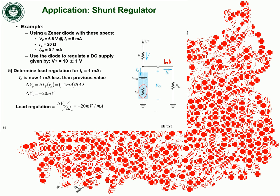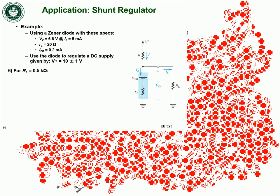For load regulation, assuming a load current of 1 mA, the Zener current decreases by 1 mA from its no-load value. That means less voltage is dropped across RZ, and the change in output voltage is delta_IZ × RZ = (1×10⁻³)(20) = 20 mV. So load regulation is about negative 20 millivolts per milliamp. The last question — what happens if the load resistance is changed to 500 ohms — we'll look at on Monday.